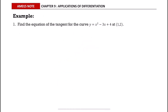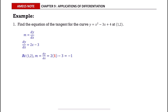In this example we want to find the equation of tangent for the curve at the point (1, 2). To find this we must have the gradient of tangent, so differentiate the given function then find its value at the point (1, 2) by substituting 1 into dy/dx.